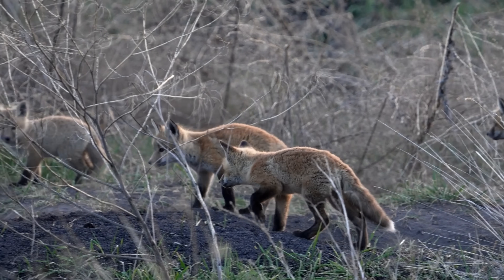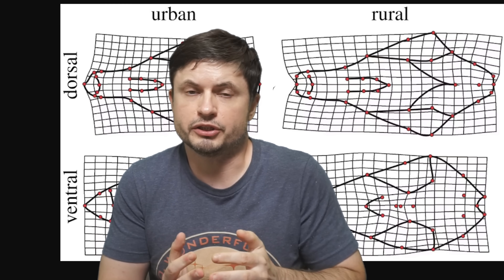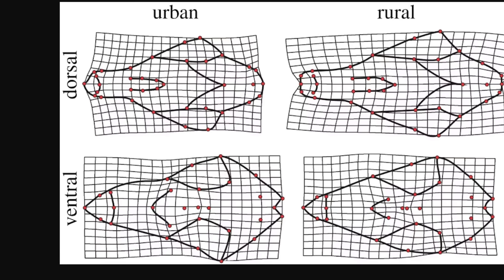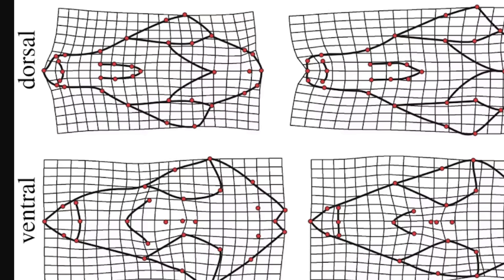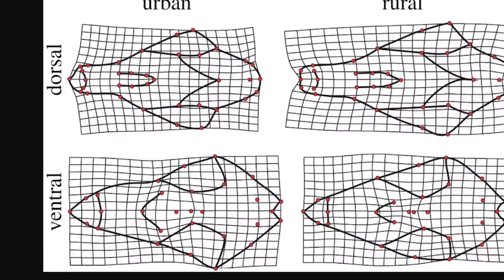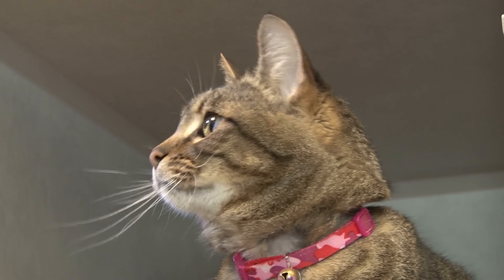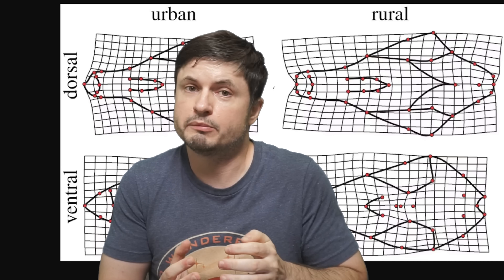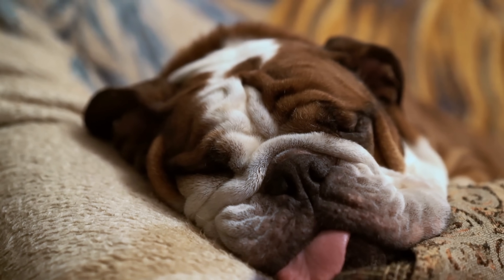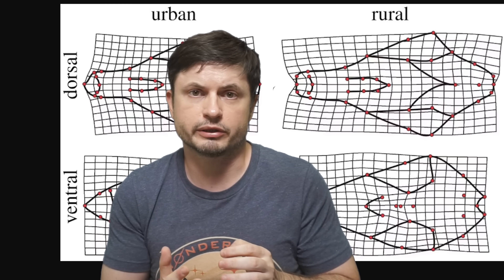Strangely, even the sexual dimorphism of these urban foxes — the size difference between males and females — has disappeared. The best explanation is that this is adaptation to city survival: shorter, wider snouts allow them to efficiently scavenge food from human garbage. What's truly remarkable is that many of these initial changes are surprisingly similar to morphological changes observed in the early stages of dog and cat domestication, potentially suggesting that adapting to human environments may actually prime certain animals for domestication — a phenomenon some scientists call domestication syndrome.